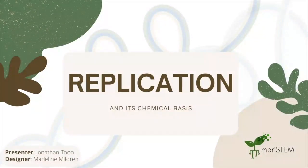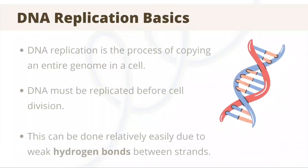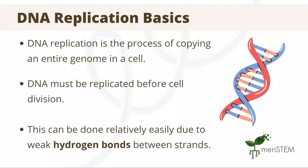Have you ever thought about how a baby becomes an adult? How do so many cell divisions occur, yet all cells still contain the same DNA? Well, the body ensures this through DNA replication. So, what is this process, when does it occur, and why is it important?